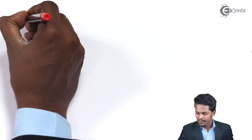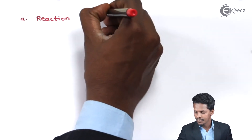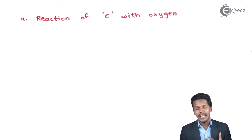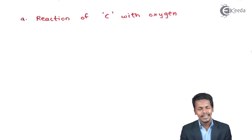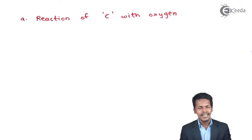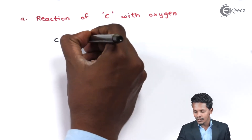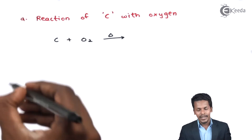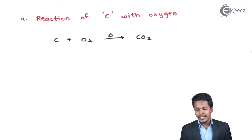Let us understand whether carbon reacts with oxygen or not. Pure carbon such as diamond won't react with oxygen easily. However, a substance like coke, which consists of carbon, can easily react with oxygen when a certain amount of heat is supplied, forming carbon dioxide CO2. This happens when we supply an excess amount of oxygen, so a combustion or oxidation reaction takes place.